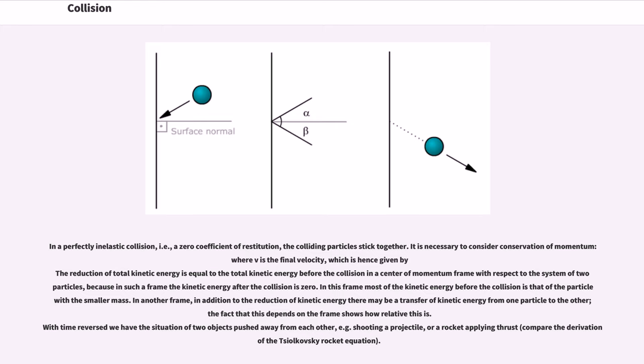In a perfectly inelastic collision, i.e., a zero coefficient of restitution, the colliding particles stick together. It is necessary to consider conservation of momentum where v is the final velocity, which is hence given by the reduction of total kinetic energy is equal to the total kinetic energy before the collision in a center of momentum frame with respect to the system of two particles.